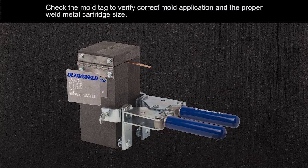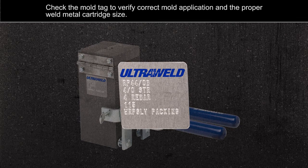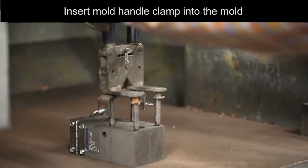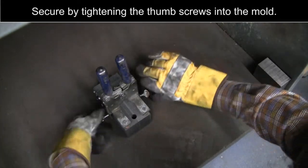Check the mold tag to verify correct mold application and the proper weld metal cartridge size. Insert the mold handle clamps into the mold and secure by tightening the thumb screws.